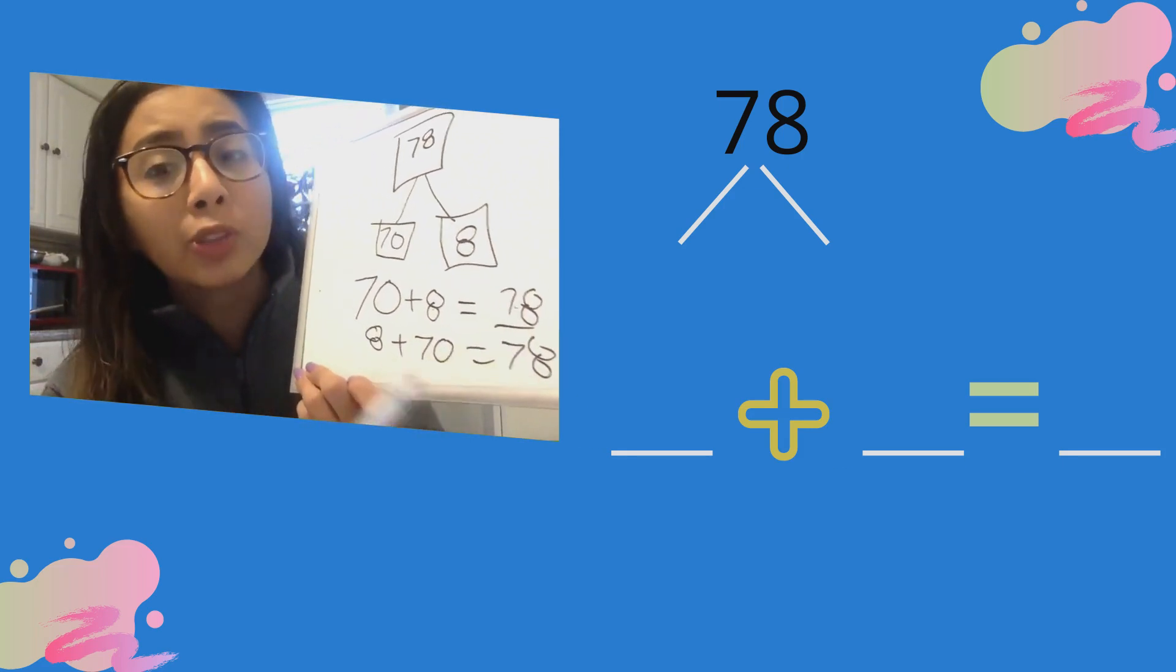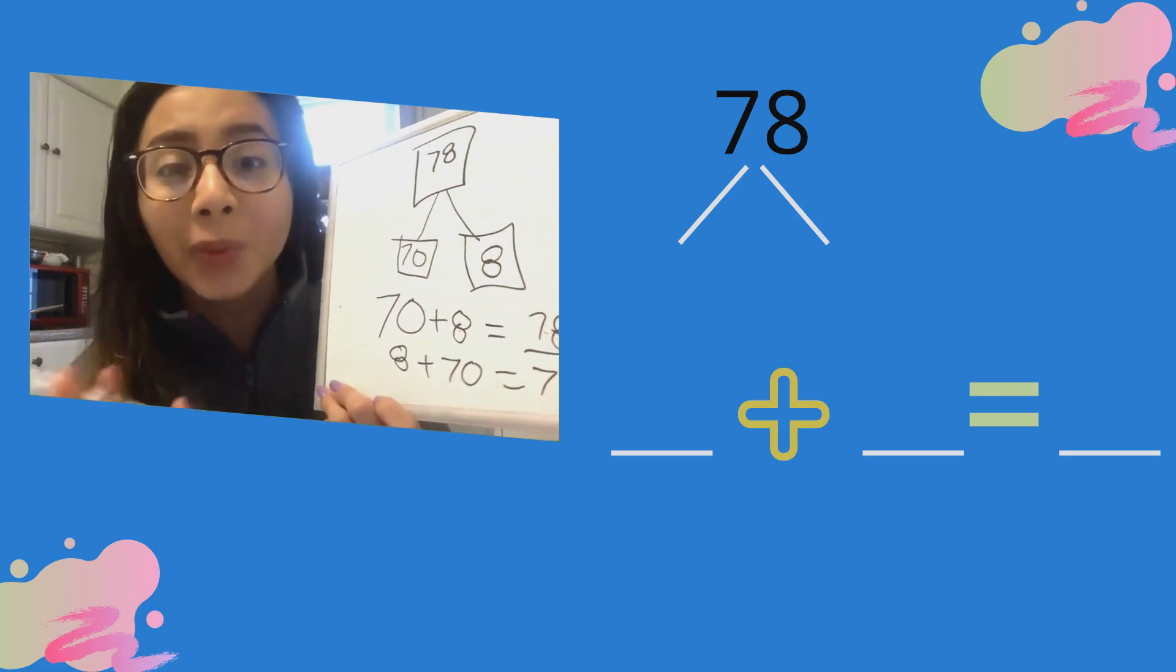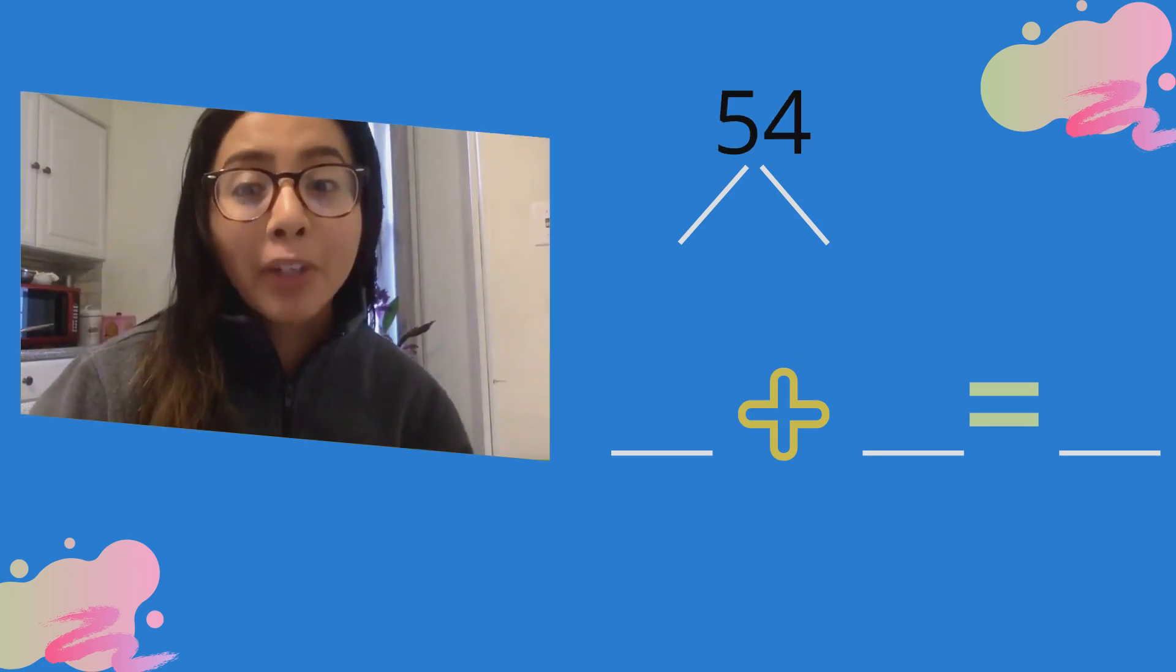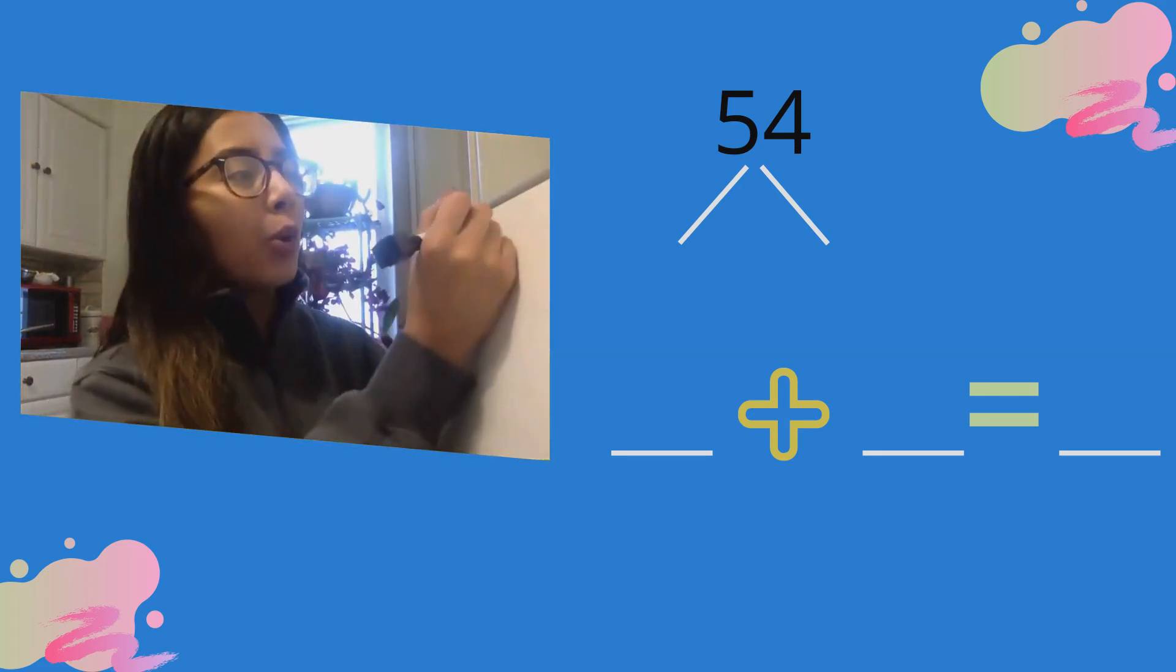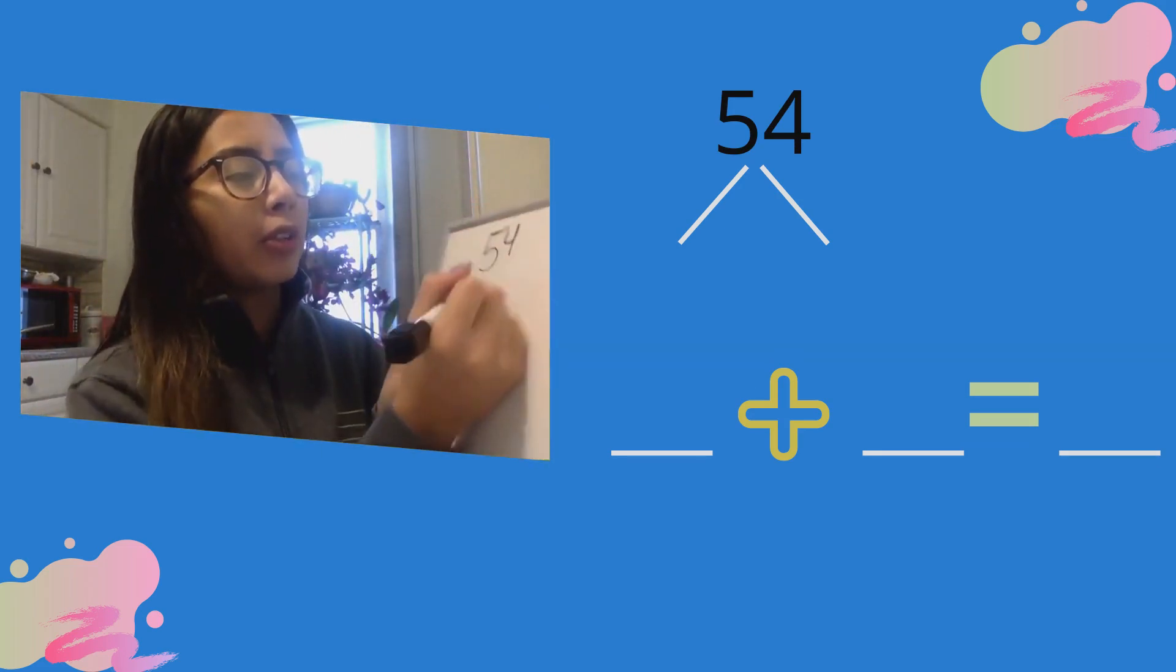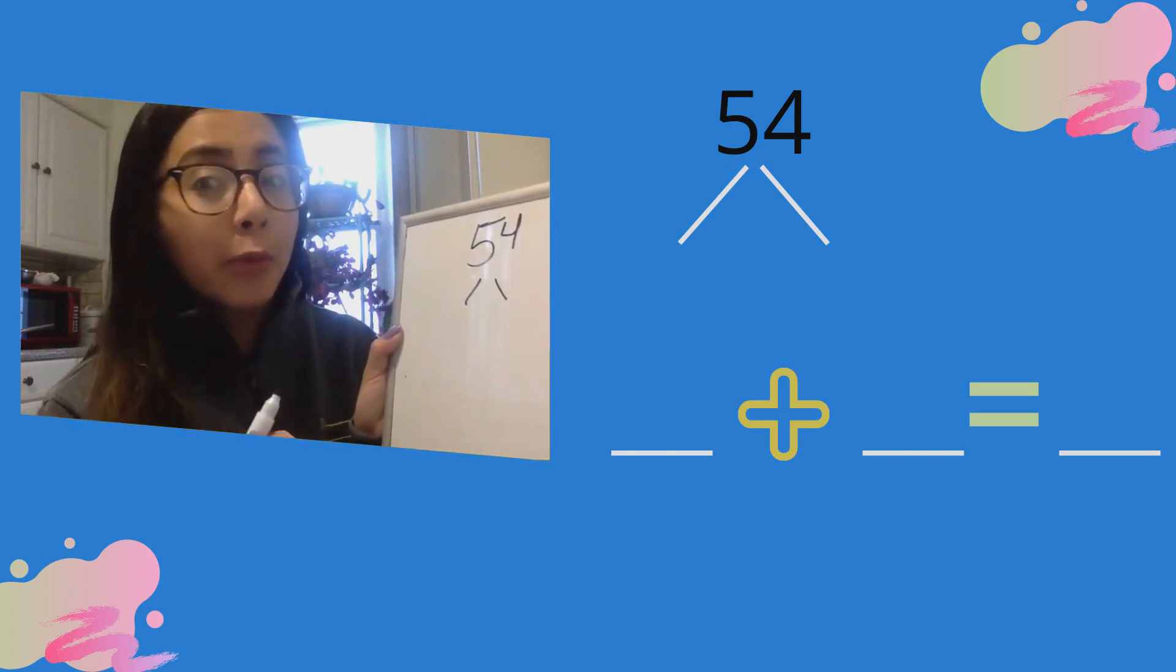Let's try it with the number 54. We can write our number bond first. What will our number bond look like for 54? So if we break the number apart into our tens and ones.